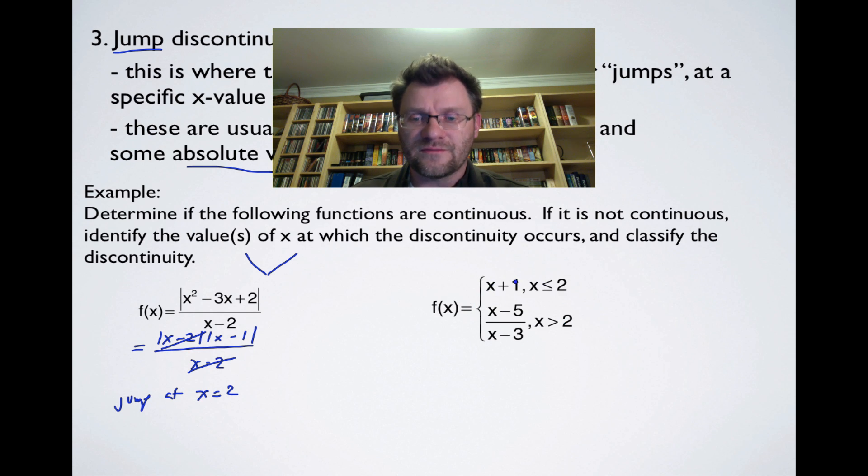Now in this case, we've got a piecewise function. So once we see piecewise functions, we need to check to see if there's going to be a jump. And there's going to be a jump, possibly, at x equals 2. And the way to check to see if there is a jump is to see if we get different heights when we plug in 2 to both these pieces of this function.